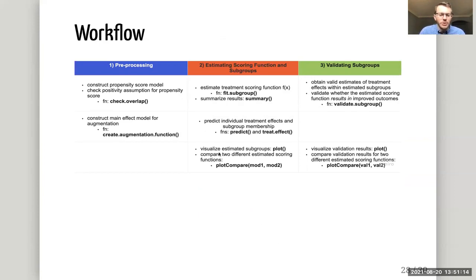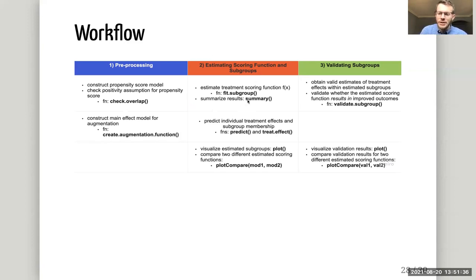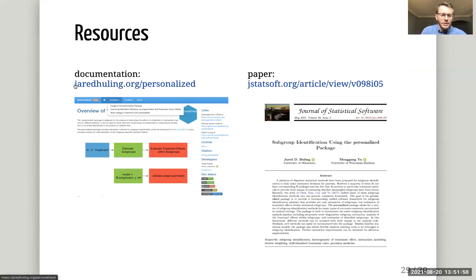To reiterate the workflow of the personalized package: the first step is the design stage, where we construct and investigate our propensity score model and optionally construct an augmentation function for efficiency. The second step is estimating our scoring function and using it to estimate subgroups, with plotting functions available to examine those subgroups. The final step is validating our estimated scoring function to understand whether there really are enhanced treatment effects within the estimated subgroups. There is quite extensive documentation at the package website, with several vignettes and thorough documentation of every function, as well as a paper in the Journal of Statistical Software detailing the statistical methods and implementation.